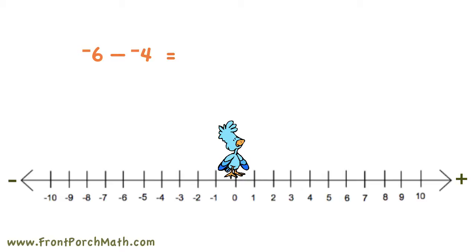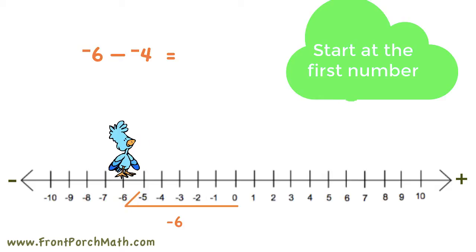To solve the problem negative 6 minus negative 4, we are going to pretend that we are walking along a number line. First thing we're going to do is to stand on negative 6, the first number in our problem.